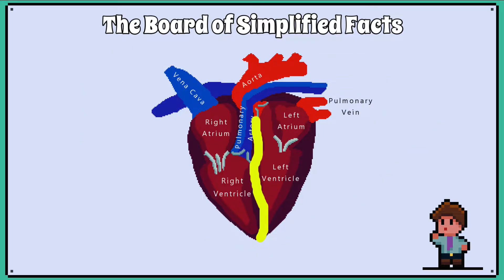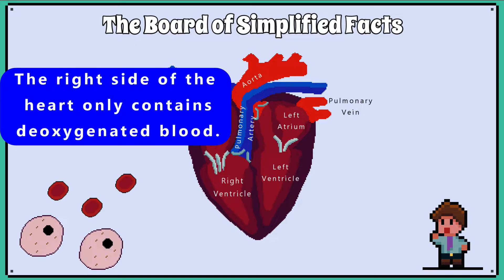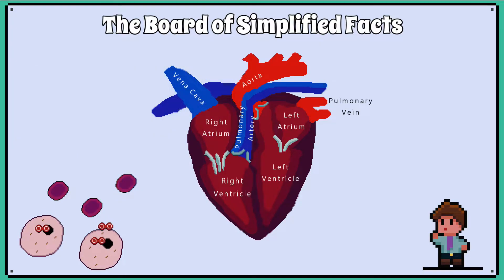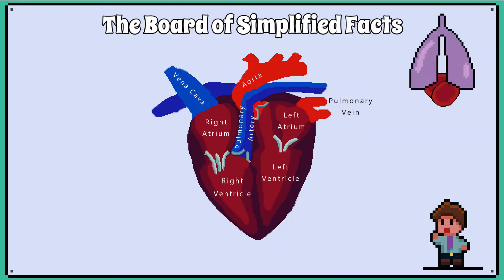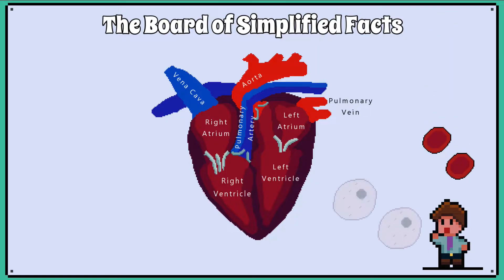The heart is split in the middle so that the blood in the right side of the heart does not mix with the blood in the left side. The right side only has deoxygenated blood, which contains red blood cells that have dropped off oxygen to cells in the body and now need to pick up more oxygen in the lungs, specifically the alveoli. The left side of the heart only holds oxygenated blood, which is red blood cells that have just come from the lungs, specifically the alveoli, and now need to deliver the oxygen to the cells in our bodies.